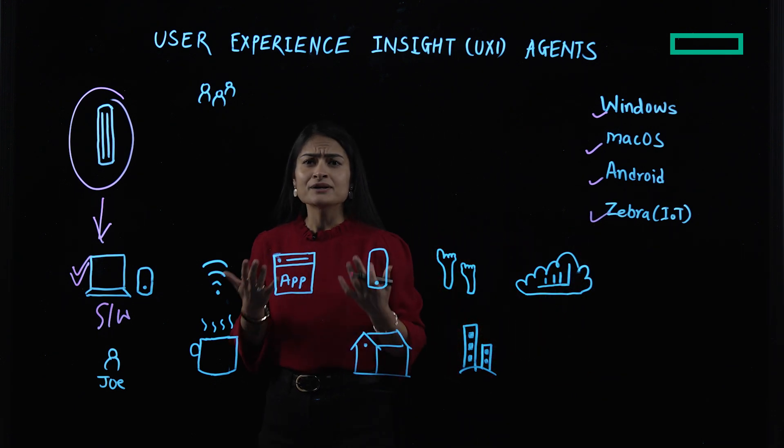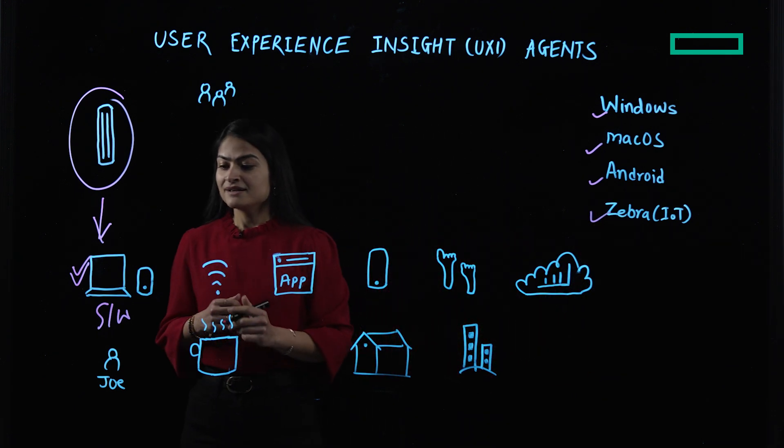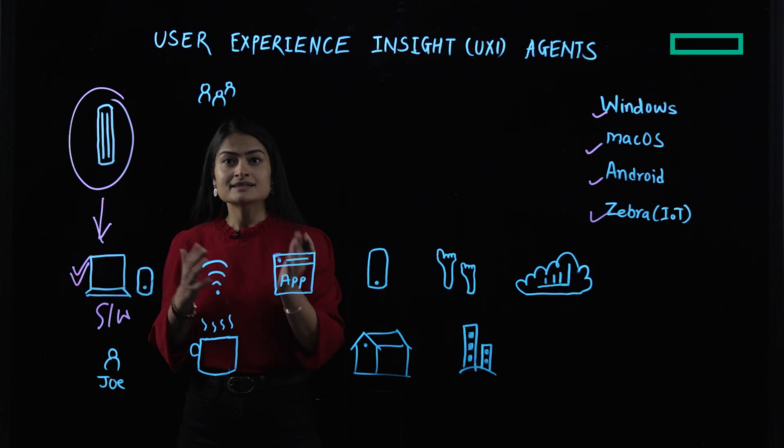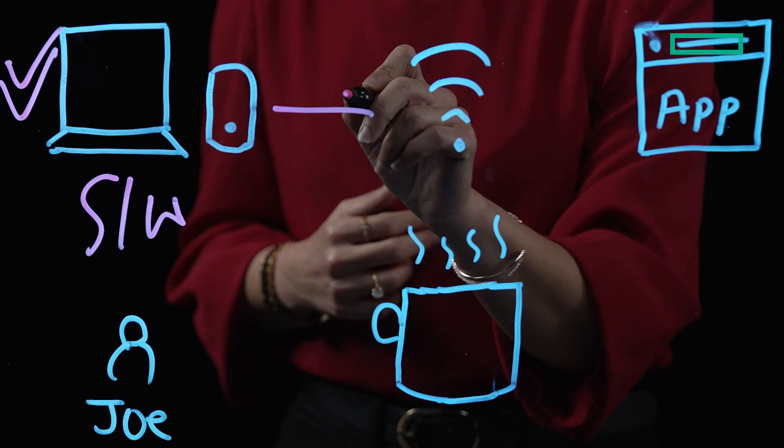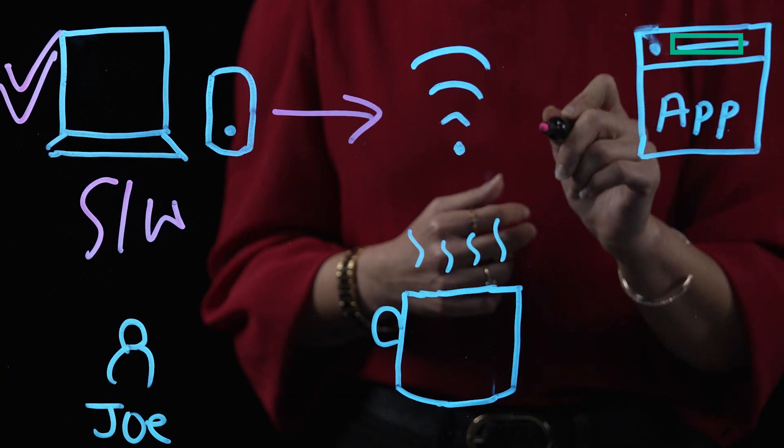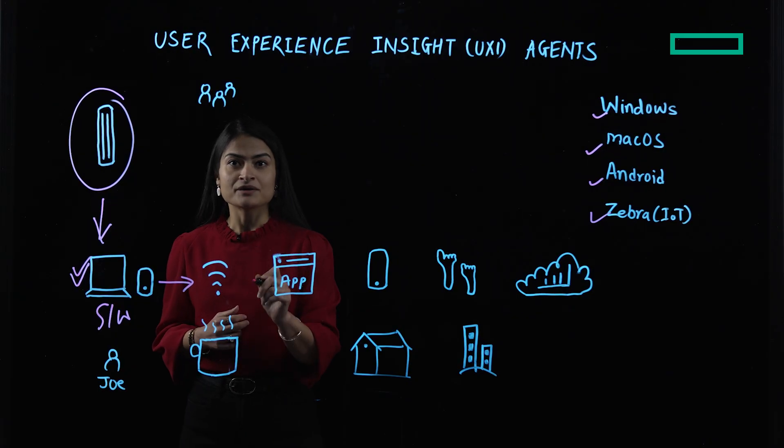But let's see, how does it really work? So our agent runs in the background and performs synthetic tests. It tests the same network that the user is connected to and measures network performance.